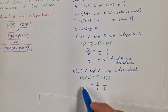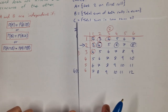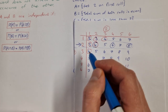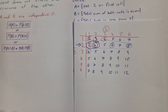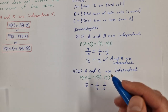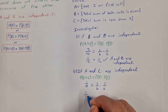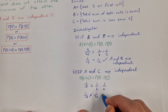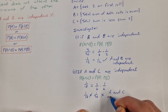Now the probability of the intersection — getting a 2 on the first roll and getting less than 5. We're in this row again for a 2 on the first roll, and getting less than 5 gives only 2 events, so that's 2 out of 36, or 1 out of 18. Is 1 over 18 equal to 1 over 6 times 1 over 6? That would be 1 over 36, which is not true. So A and C are not independent.